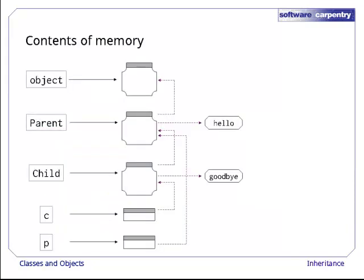This picture shows you what's going on inside Python in this example. At the top is the class object, which is built into Python. Below that is our class parent. It inherits stuff from object. That's why we've been putting object's name in parentheses every time we've defined a class so far. And it adds a method of its own, called hello. Below that is the class child. It inherits from parent, and adds another method, goodbye.